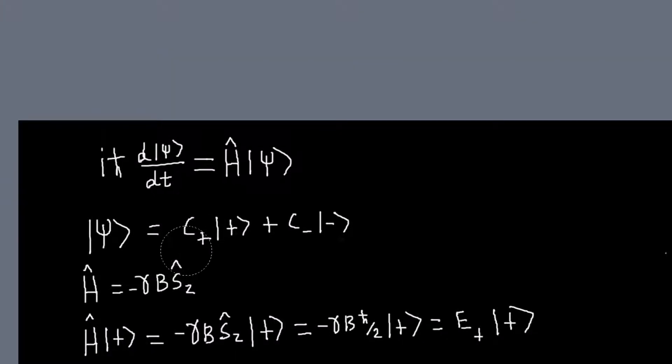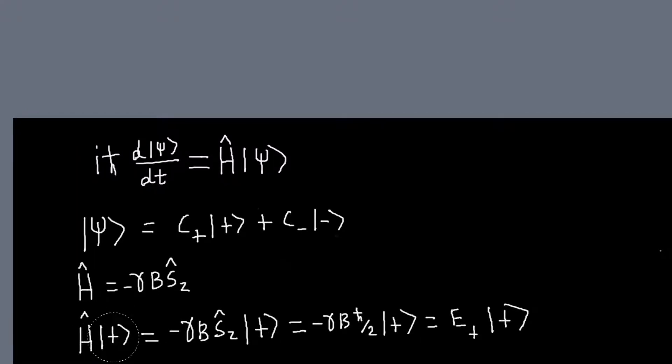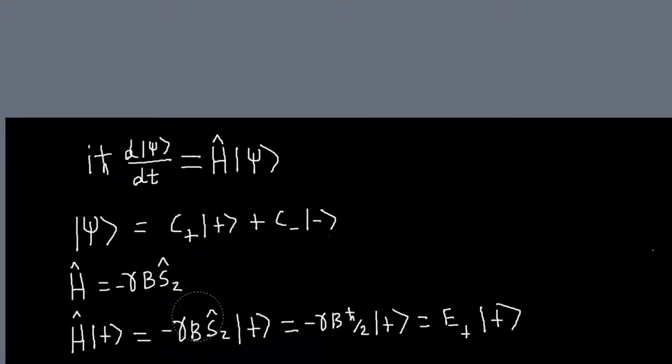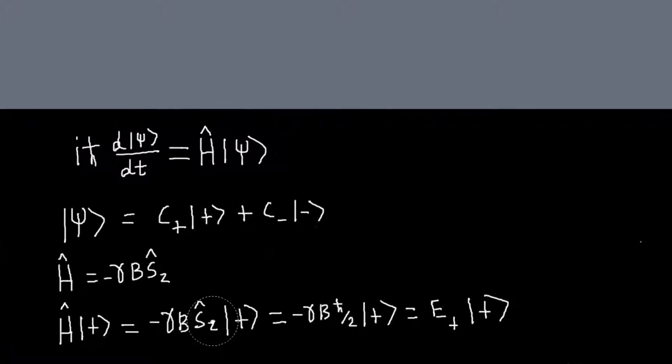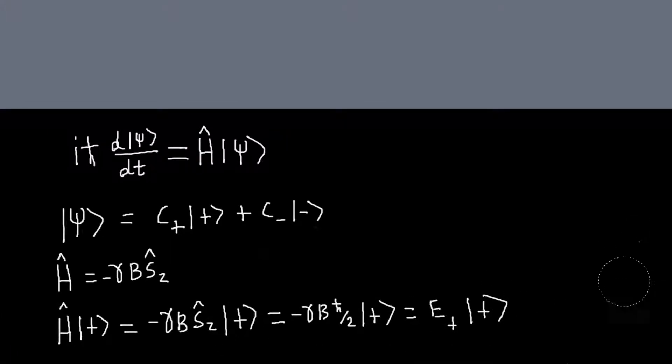And we can see that these states are also eigenstates of the Hamiltonian by just acting the Hamiltonian on the plus state, for example. So this is minus gamma b sc, and we get h-bar over 2. And so we can call this value E plus. So this tells me that my plus state is an eigenstate of my Hamiltonian with eigenvalue E plus.